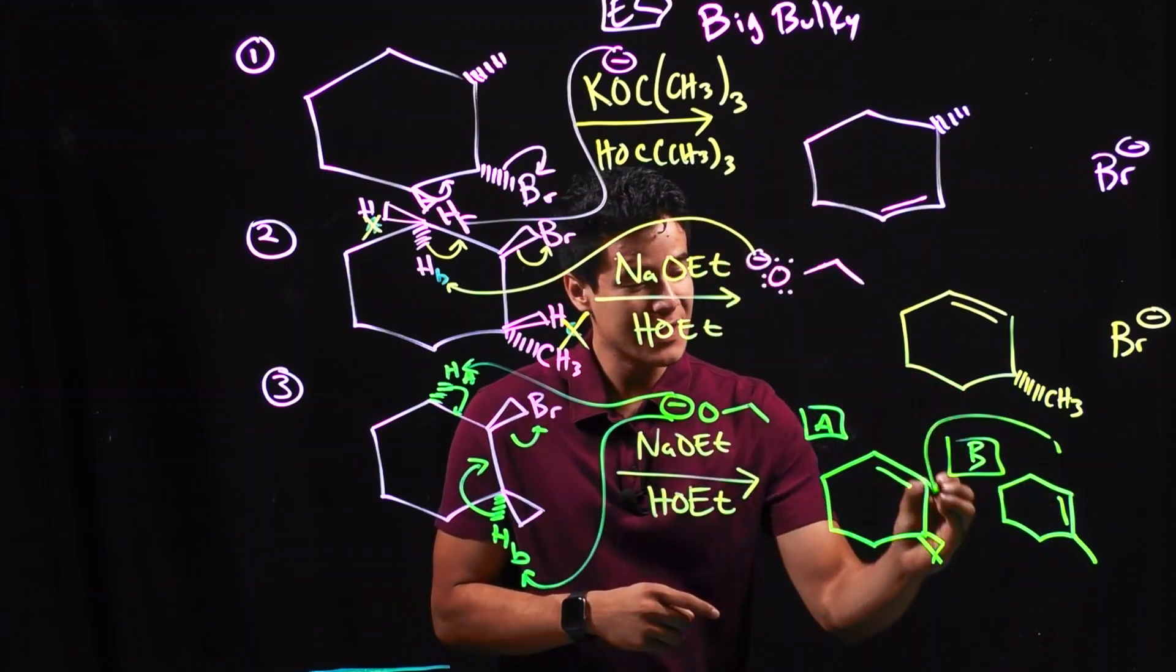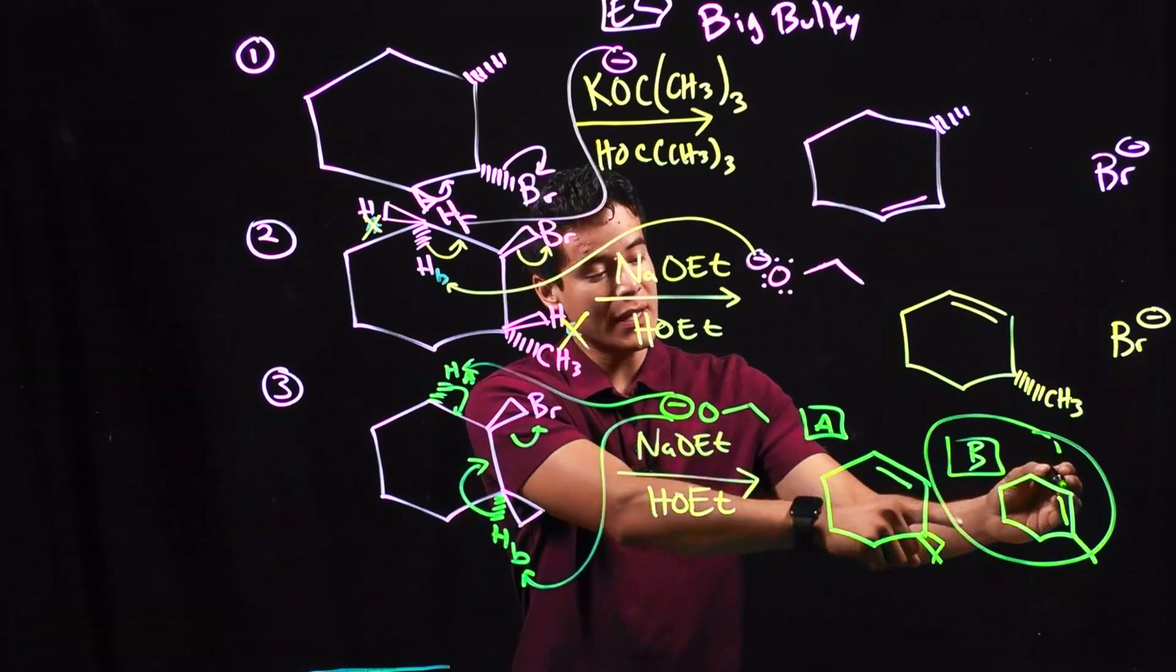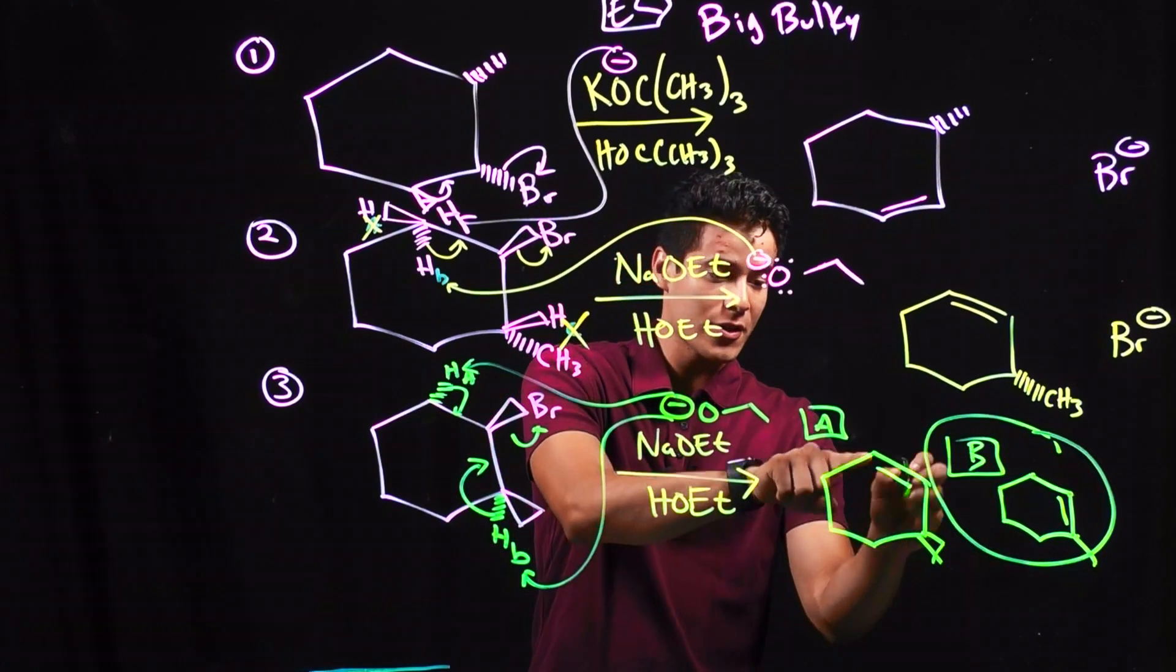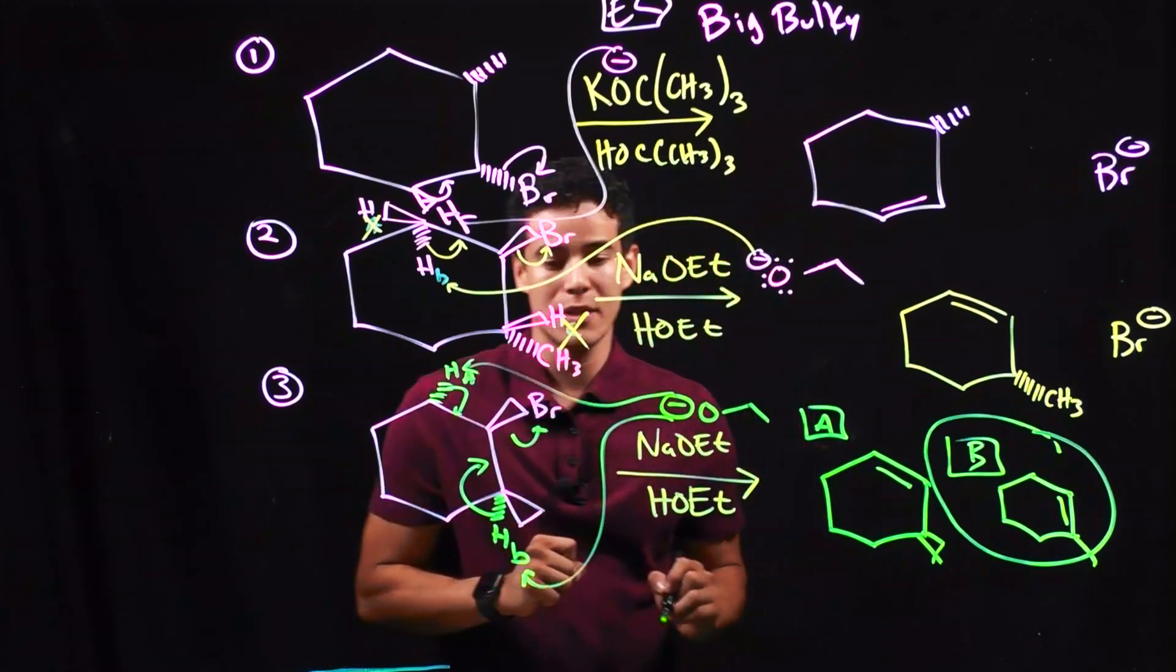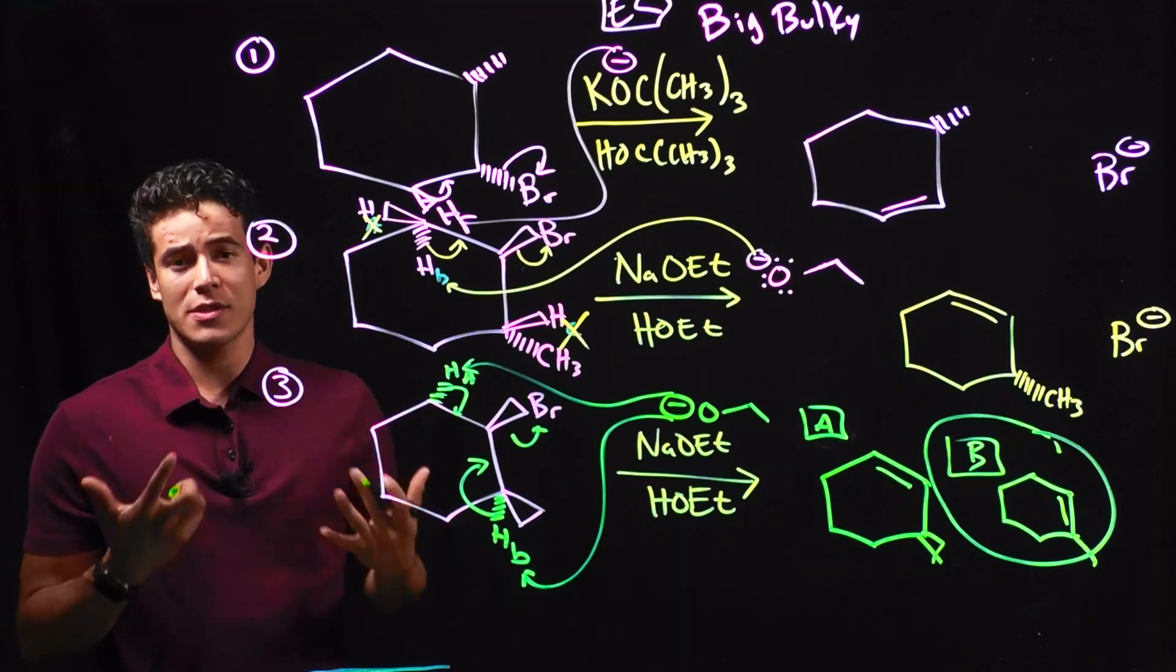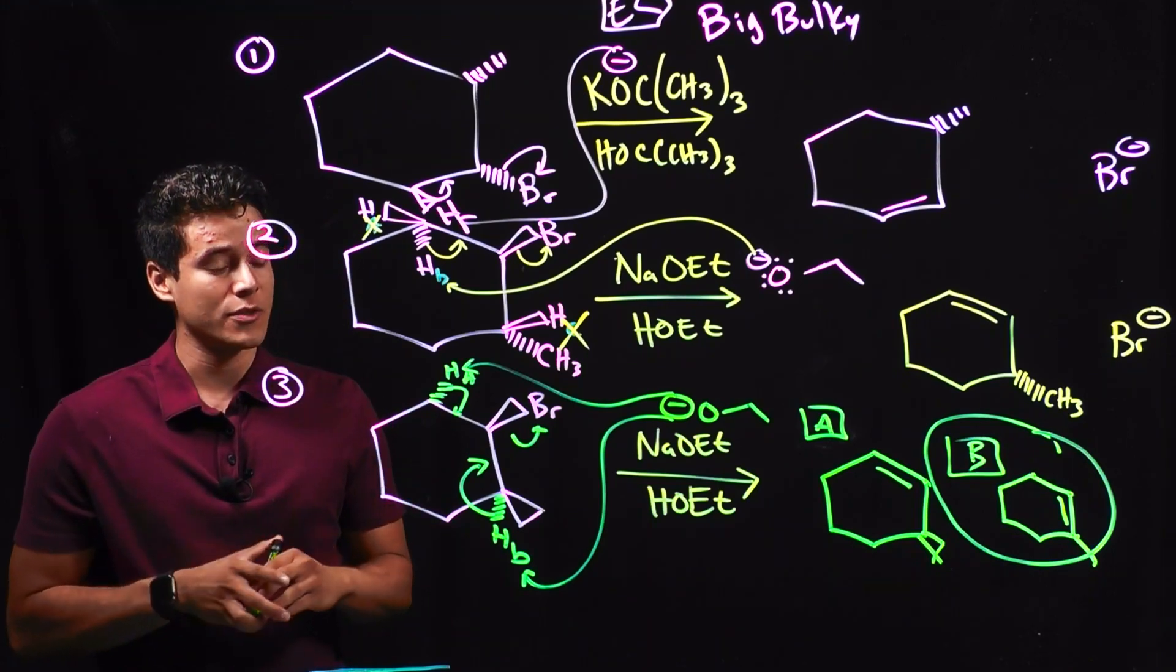So if I had to choose between A and B, B is going to be my final answer. Because B, you can see here, it's tri-substituted versus here, it's only di-substituted. So you want to make sure that your alkene formation gives you the most substituted alkene possible.